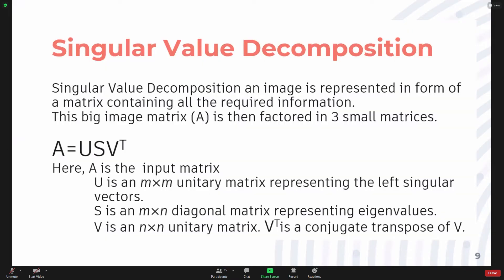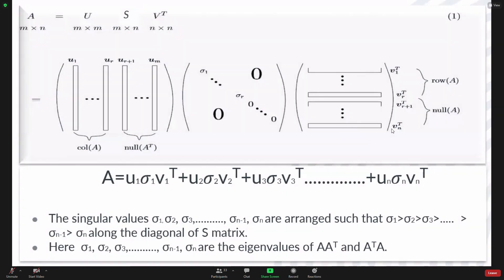In singular value decomposition, an image is represented in the form of a matrix containing all the required information. This big image matrix is then factored into three matrices as shown in the expression below. Here, A is the input matrix. U is an m×m unitary matrix representing left singular vectors. S is an m×n diagonal matrix representing the eigenvalues. And V is an n×n unitary matrix. V^T is the conjugate transpose of V matrix. This expression can also be represented in matrix form, shown in this image given here in this slide.